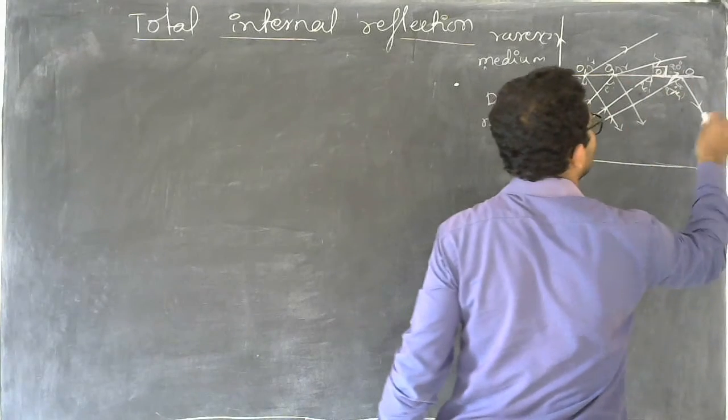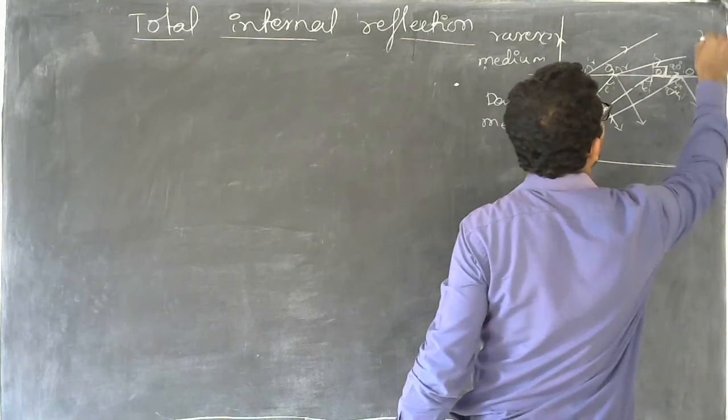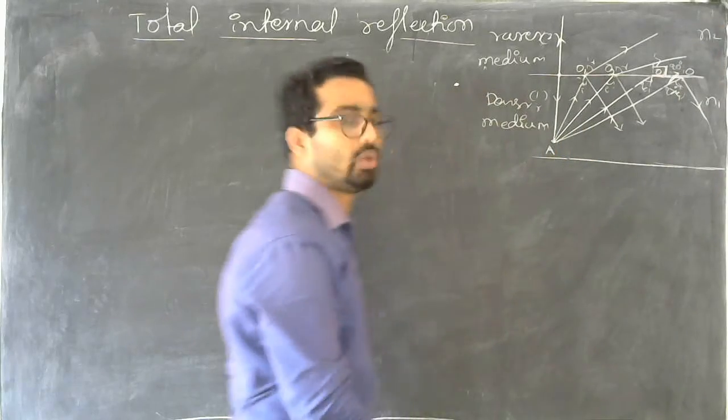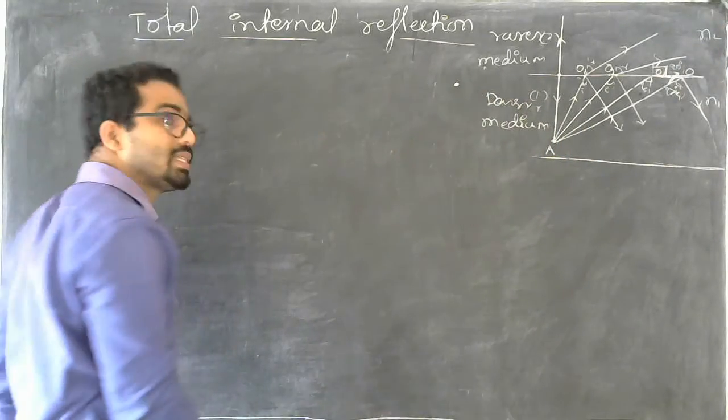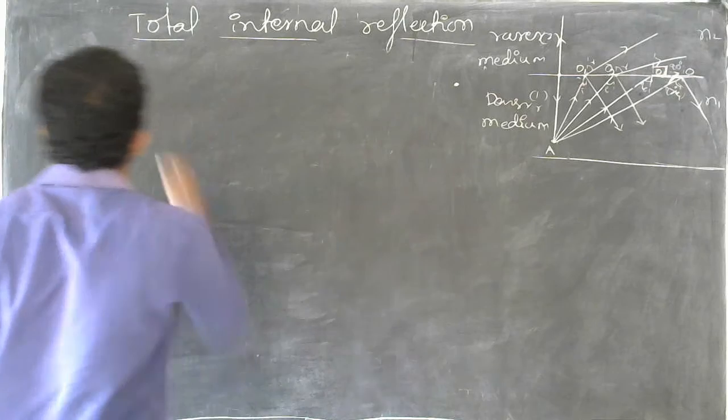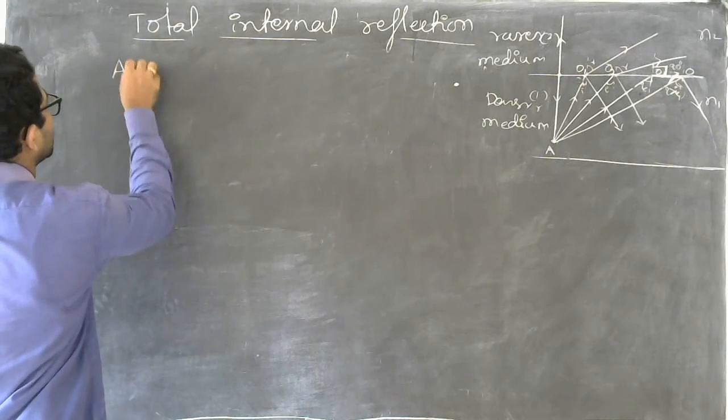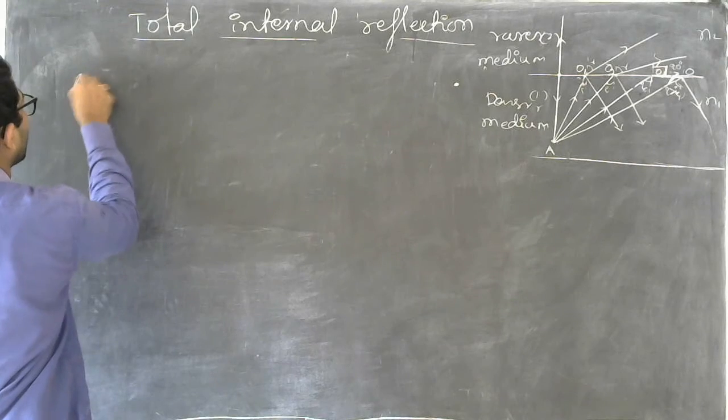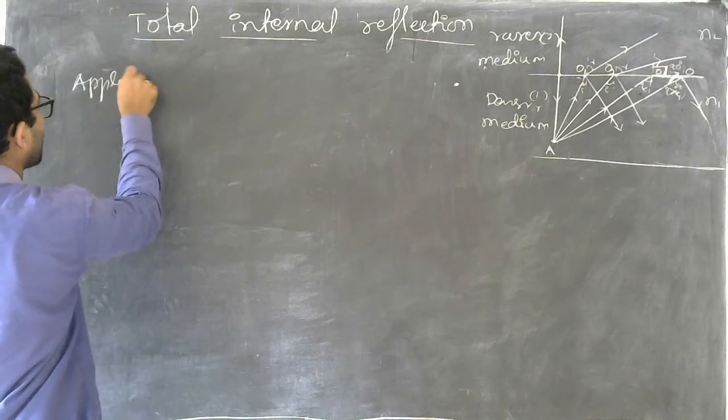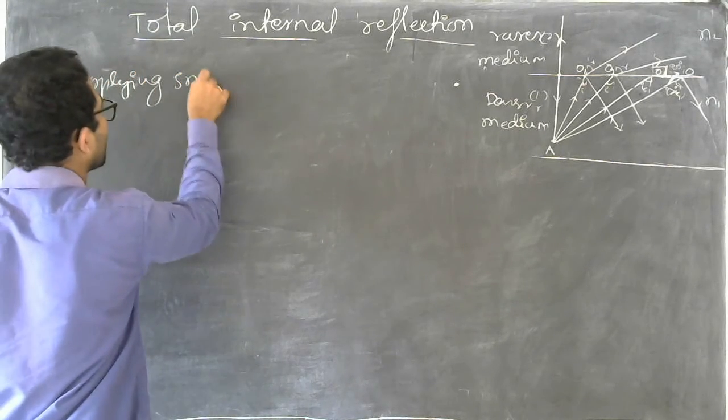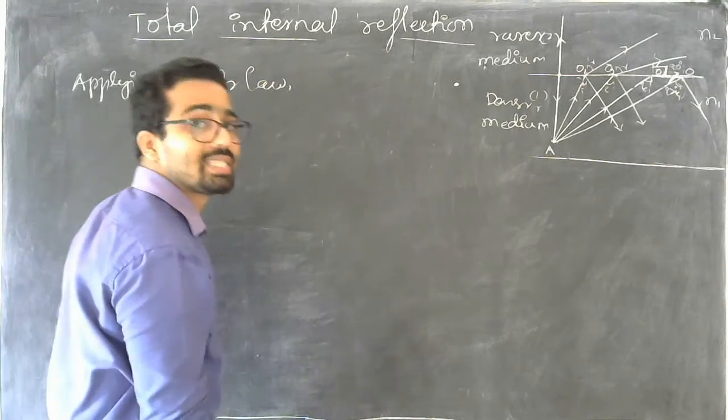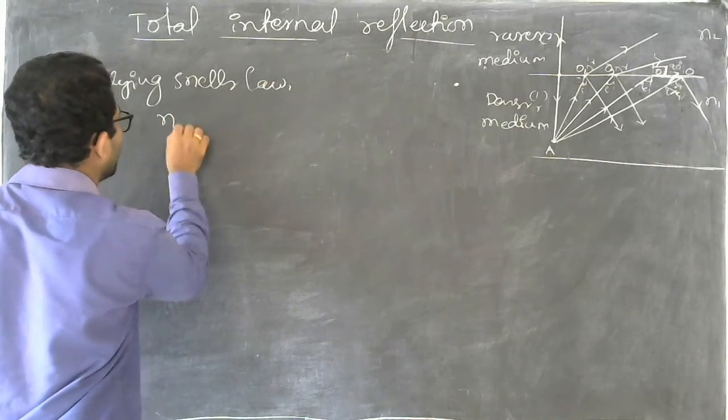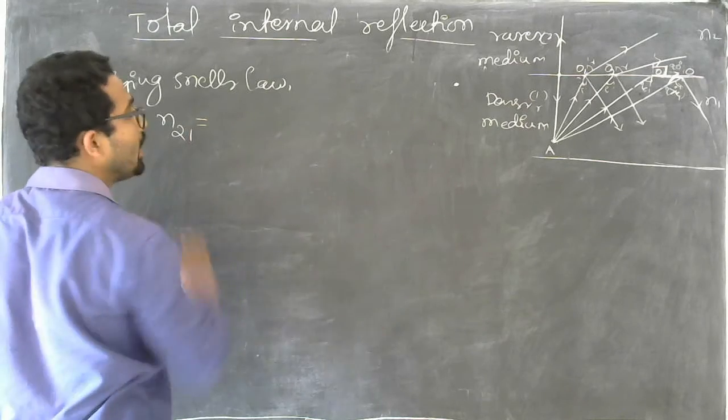This medium has a refractive index n1, here it is, let's say n2. Now let us apply Snell's law. Applying Snell's law, that is n21 is equal to n2 by n1, is equal to sine i divided by sine r.